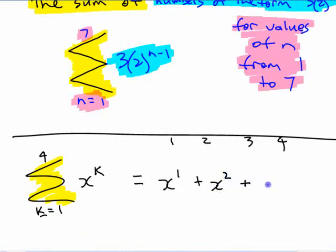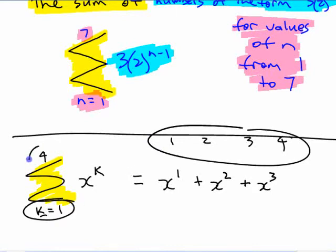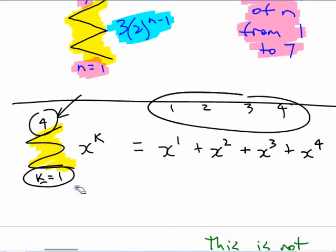What's the third term going to be? x cubed. There's four terms, because we're going from one to four. What's the last term? Are we up to this number yet? We are, right? x to the fourth. I can tell this would have been better if it wasn't first thing in the morning.